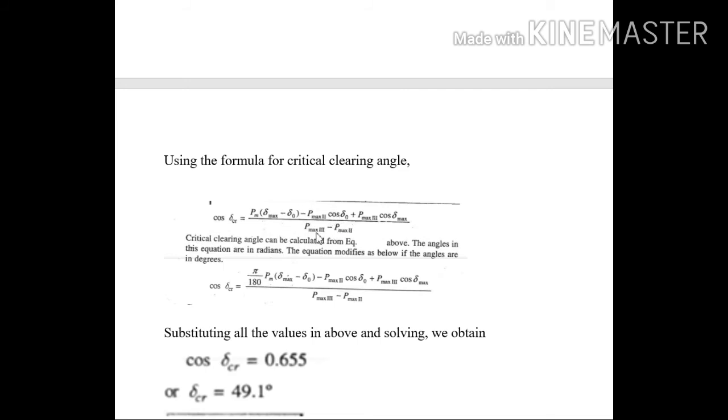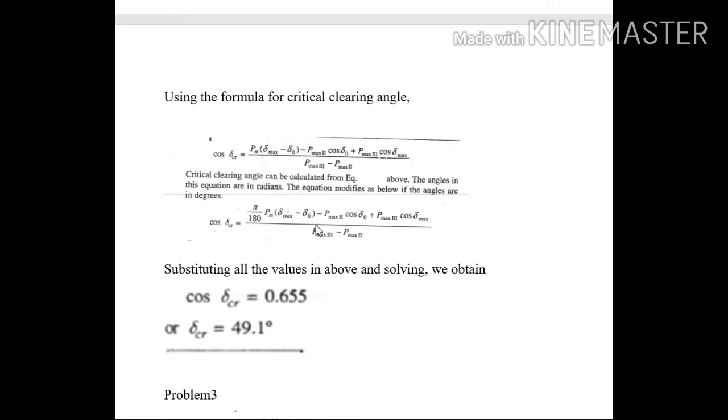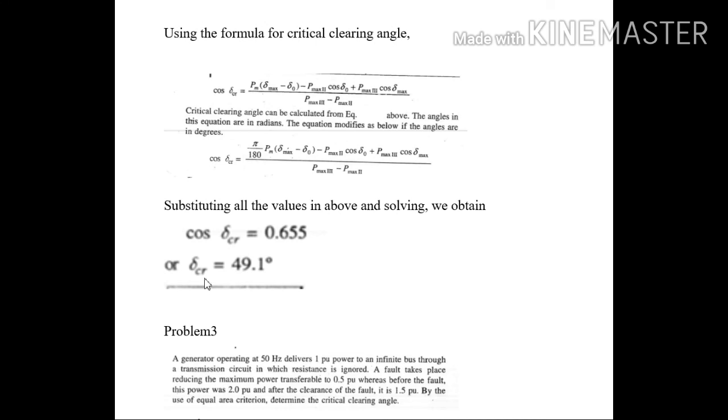Then using the formula for critical clearing angle, the expression that we discussed in our formula sheet slide. Substitute all the values. Now you are knowing all the values. If I want in degrees, use this formula. Substituting all the values in this formula, we got the expression as cos delta CR equals 0.655, and hence the critical clearing angle in degrees will be 49.1 degrees.